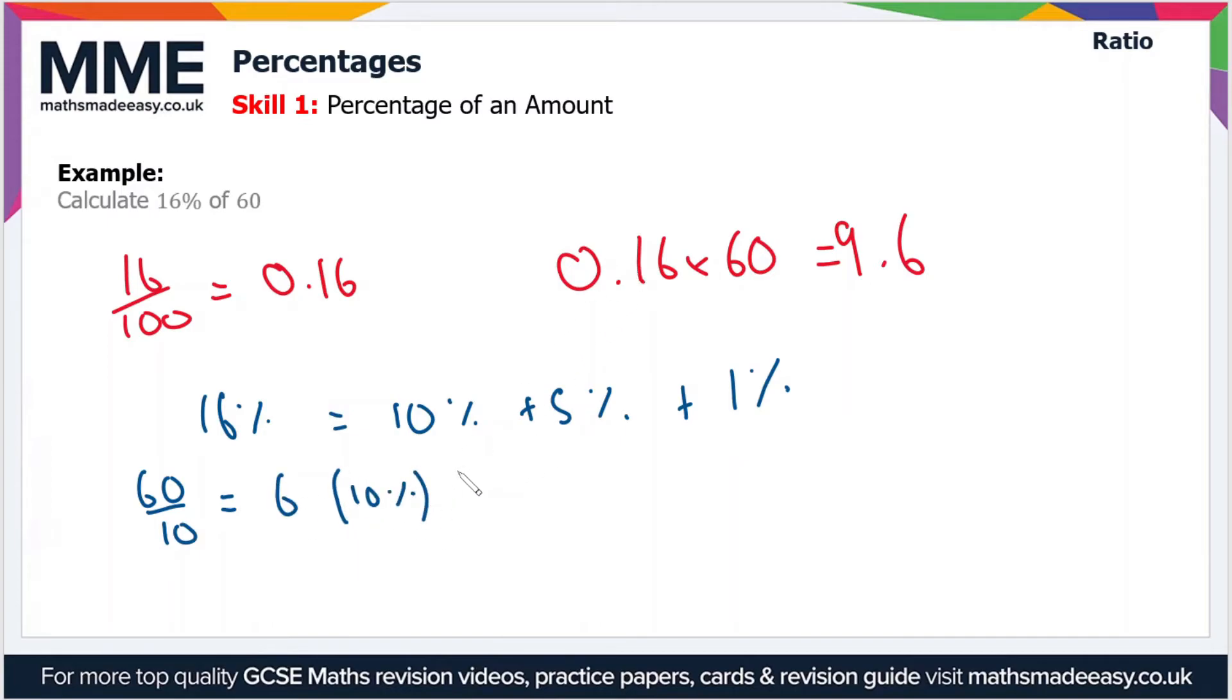What about 5%? Well it's just half the value of 10%, so we have 3 and that's 5%. And now 1% you find by just dividing the 10% value by 10. So 6 divided by 10 is 0.6. So that's 1%. So if we add all of these together we get 6 plus 3 plus 0.6 which is 9.6. So as you can see that's the same answer as we got before. So therefore that is 16% of 60.